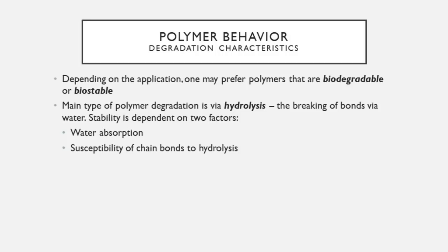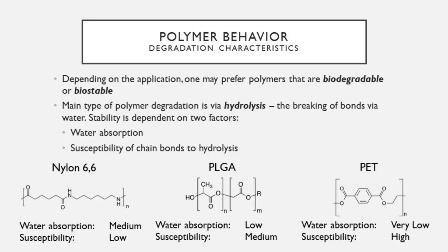The main type of polymer degradation occurs via hydrolysis — the breaking of bonds by water. Stability depends on two factors: water absorption (how readily water can interact with the polymer) and the susceptibility of chain bonds to hydrolysis. For example, nylon-66 can absorb some water, but its amine bonds have very low susceptibility to hydrolysis. While they do hydrolyze, it occurs over such a long period that over a patient's lifetime, nylon-66 is considered biostable.